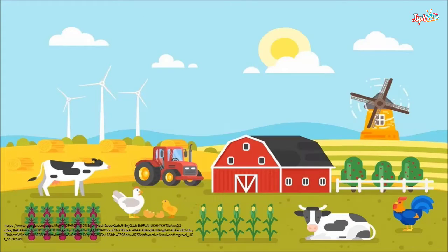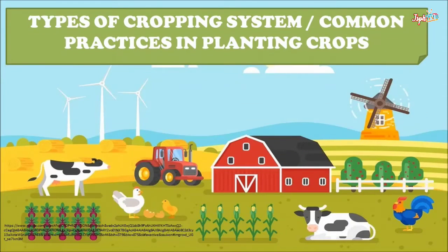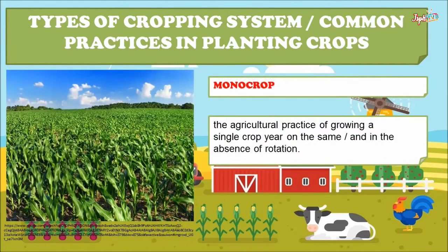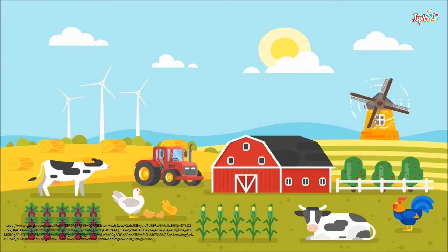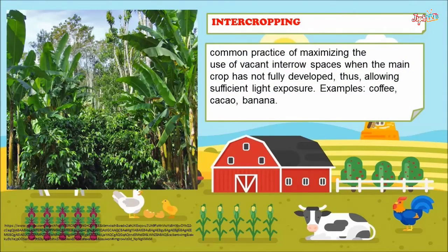There are types of cropping systems or common practices in planting crops. We have monocrop, the agricultural practice of growing a single crop year after year on the same land in the absence of rotation. We also have intercropping, the common practice of maximizing the use of vacant inter-row spaces when the main crop has not fully developed, allowing sufficient light exposure — examples include coffee, cacao, and banana.